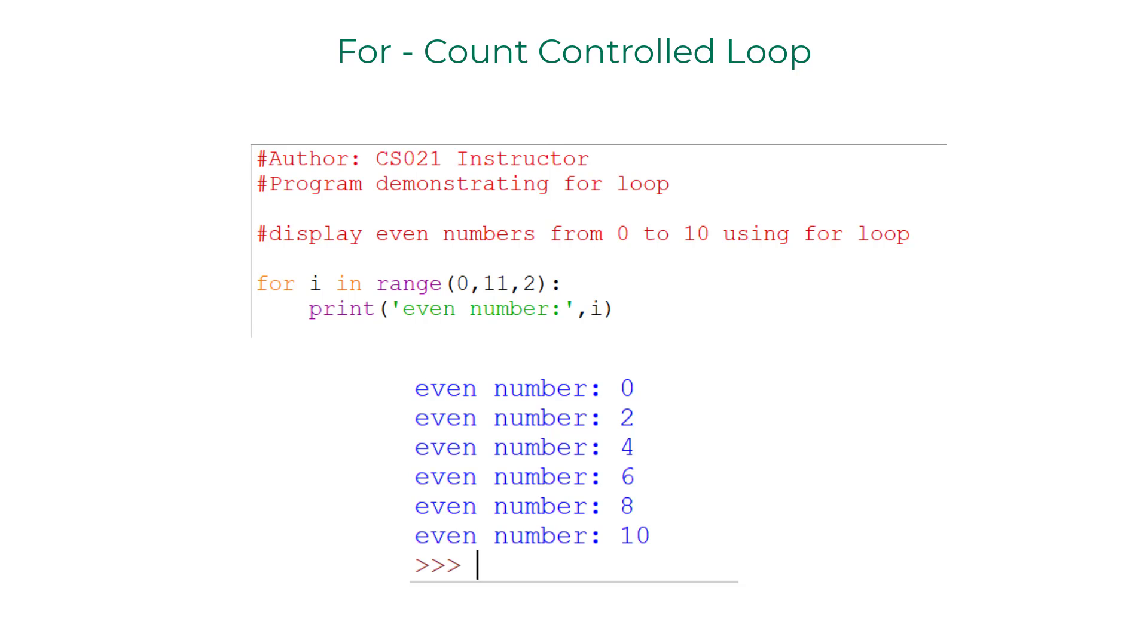The iterator variable starts with 0, so 0 is printed. Then it is incremented by the step size specified, so it will be 2.